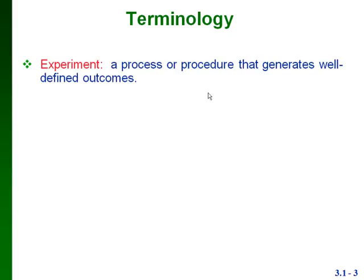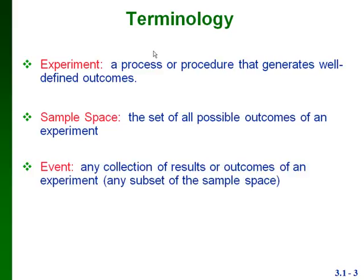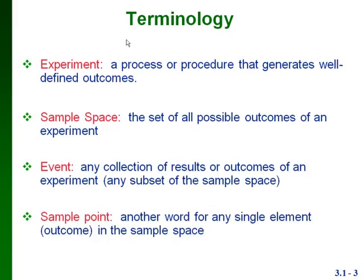Let's get started talking about probability. First, we have some terminology you need to know. An experiment is a process or procedure that generates well-defined outcomes — we know what the possible outcomes are going to be. The sample space is the set of all possible outcomes of an experiment. An event is a collection of outcomes of an experiment, so it can be any subset of a sample space. A sample point is another word for any single element or outcome in the sample space.